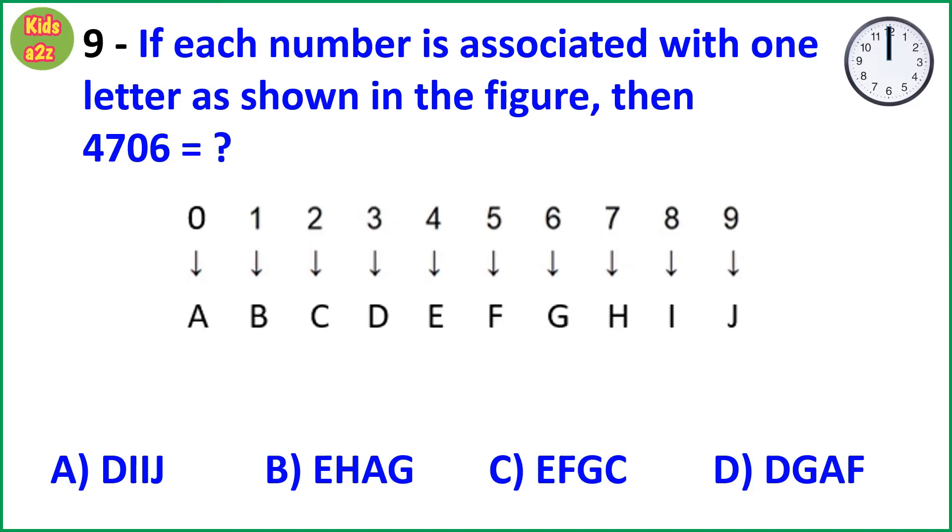Question 9: If each number is associated with one letter as shown in the figure, then 4706 equals to what?